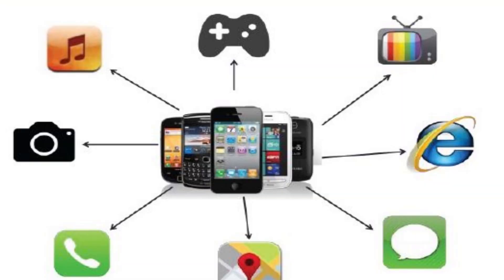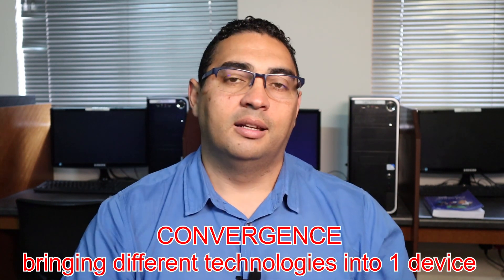Column A, 2.1 says: the trend where separate technologies and functions that required different devices in the past are combined into a single device. In the past, we had a camera, a cell phone, a pager, a laptop — all separate physical devices. Today, we have all of this combined into single devices. Your phone can email, take pictures, take video, play audio — it's taken all those different technologies and brought them into one. The term is convergence: the bringing together of different technologies into one device.